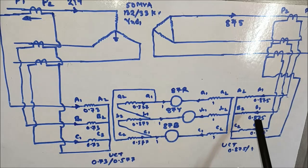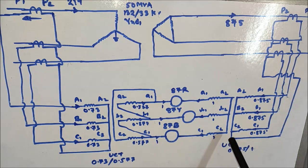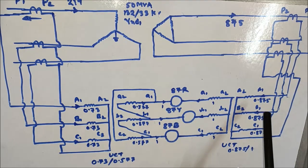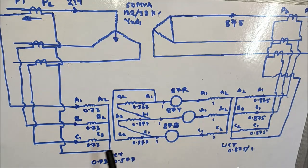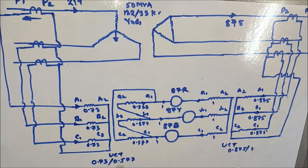On the delta side, the UCT connection is star-star type, i.e., the vector group for the delta side UCT connection is YY0. For magnitude matching, the UCT ratio on the primary side (star side) should be 0.73/0.577 — that is, if 0.73 A flows in the primary of the UCT on the star side, then 0.577 A will flow in the secondary of the UCT.